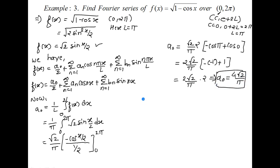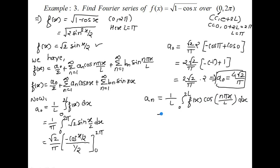Now to find An. The formula is An = (1/l)∫₀²ˡ f(x)·cos(nπx/l) dx. Replacing all values: l = π, so this becomes (1/π)∫₀²π √2·sin(x/2)·cos(nx) dx. With l = π, the π/π cancels leaving just cos(nx).